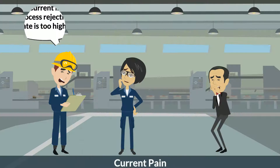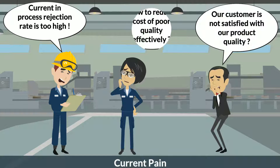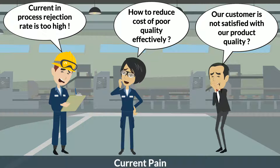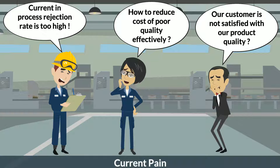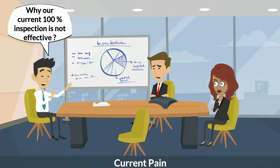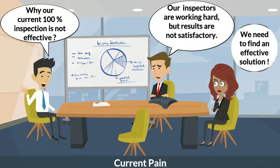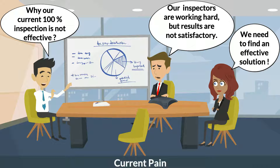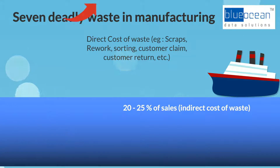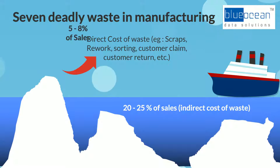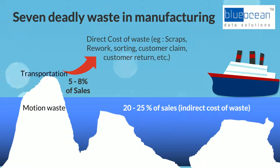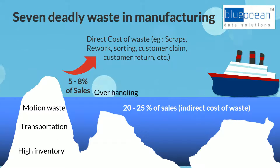There are many manufacturing companies facing the pain and problems as mentioned in this slide. Does your company encounter similar problems? Despite a lot of hard work being put into product quality control, the results are not satisfactory — it must be something wrong somewhere. Reject and defect is one of the seven deadly wastes in manufacturing, and it could cause serious disaster to company business if not controlled and managed properly.